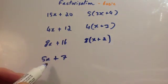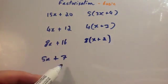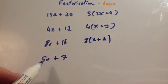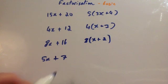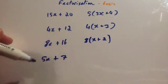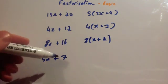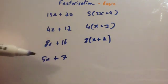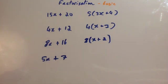Finally, 5x + 7. Well, 5 and 7 — the only common factor they have is 1. But there's no point taking 1 outside of the brackets; it doesn't really help simplify the expression. So 5x + 7 cannot be factorized — the answer is just 5x + 7.